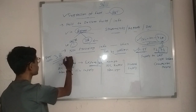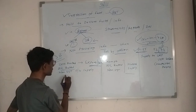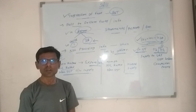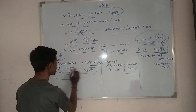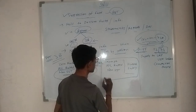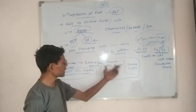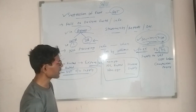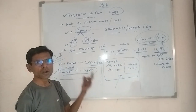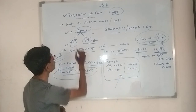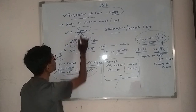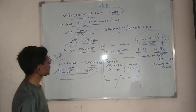To GSTR-3B mein agar aapne zero-rated supply ki information nahi di, ya phir nil-rated supply ki information nahi di, ya phir non-GST outward supply ki information nahi di — non-GST outward supply means aap supply karo phir bhi usme GST nahi lagega — to agar aapne iski information nahi di, to usse fair to declare maana jayega, i.e., suppression of fact.